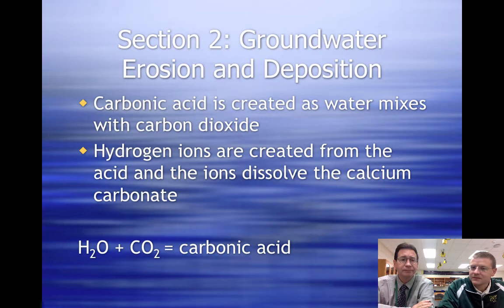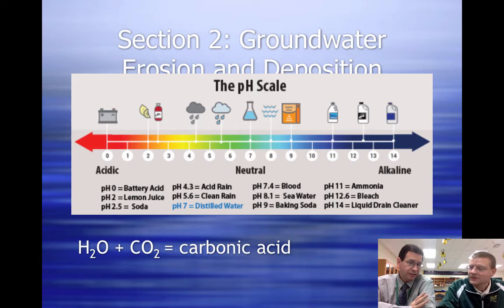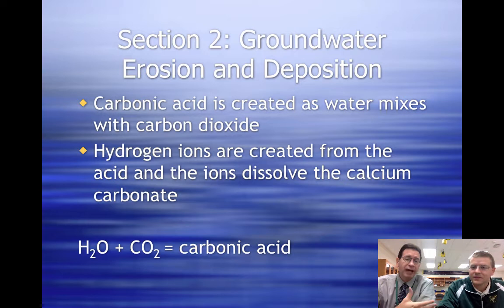We basically get acidic rain through a natural process. All rain is acidic — it's just that we don't call it acid rain until it has a lot of acid. This particular acid, carbonic acid, will react with limestone especially that's in the ground and cause dissolving.